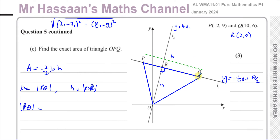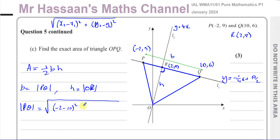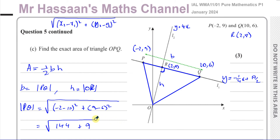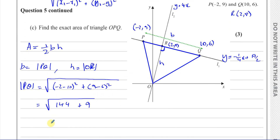Using the distance formula — square root of (change in x)² + (change in y)² — for P(−2, 9) to Q(10, 6): square root of (−2 − 10)² + (9 − 6)² = square root of (−12)² + 3² = square root of 144 + 9 = square root of 153.